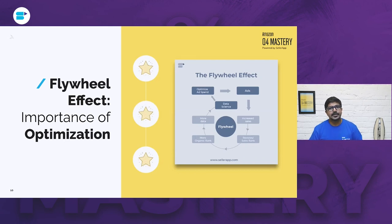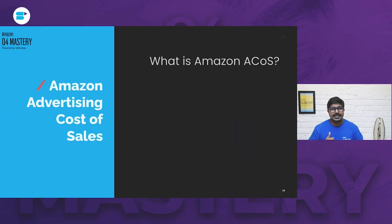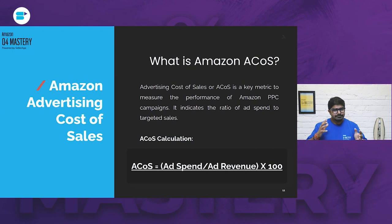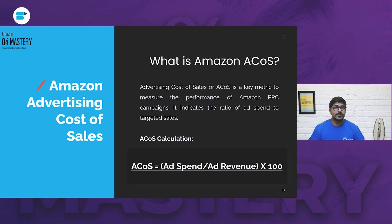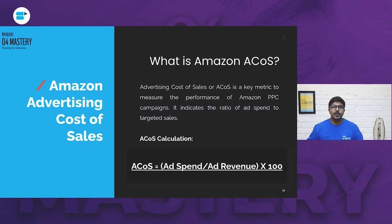One of the key metrics to track campaign performance on Amazon is ACoS — Advertising Cost of Sales. It's a simple ratio of your ad spend to the revenue it generated. The lower the ACoS, the better — however, not all sellers will have a lower ACoS as the target, because that may not be the right goal depending on the scale of your business and your campaign objectives.